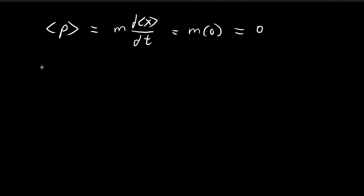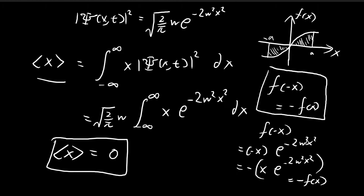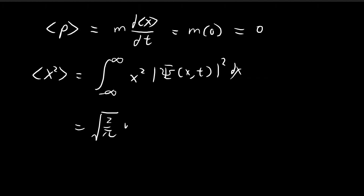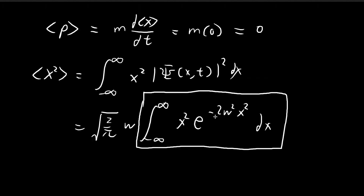Now we move on to the expected value of x squared. Applying the definition, we have x squared multiplied by the probability density function integrated. Pulling out the constants, we arrive at an integral that seems tricky to solve. If you've done some previous problems, you might remember encountering integrals that look like this — we have dealt with them in previous videos, but I'll go through the method again.